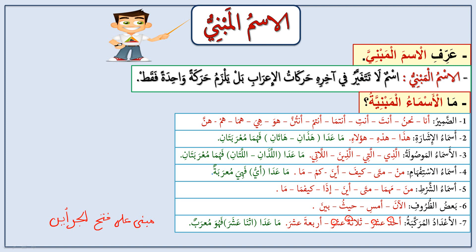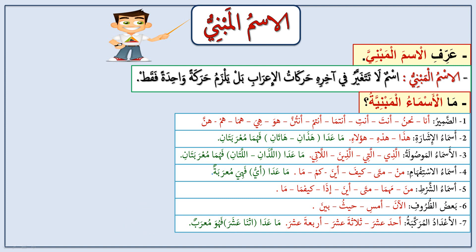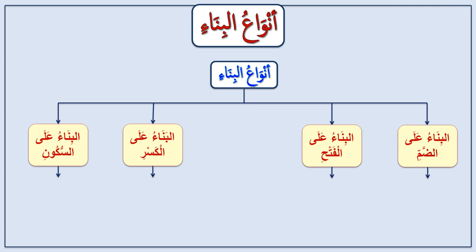Except for ithna 'ashara — twelve — which is mu'rab, because we say ithna 'ashara and ithnayi 'ashara, so the haraka changes. Al-a'dad al-murakkaba are from eleven to nineteen only. So the asma' al-mabniyu are: damir, asma' al-ishara, al-asma' al-mawsulah, asma' al-istifham, asma' al-shart, ba'd al-dhuruf (some adverbs), and al-a'dad al-murakkaba. Now halat al-bina' — the types of bina': bina' 'ala al-dhamm, bina' 'ala al-fath, bina' 'ala al-kasr, and bina' 'ala al-sukun.